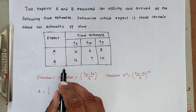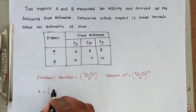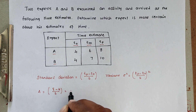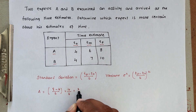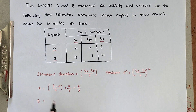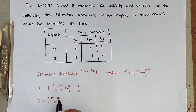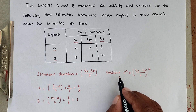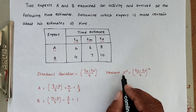For Expert A, the standard deviation is (8 − 4) / 6 = 4/6 = 2/3. For Expert B, the standard deviation is 6 / 6 = 1.